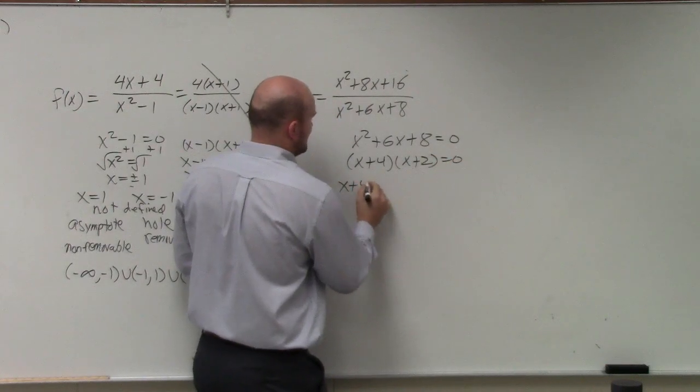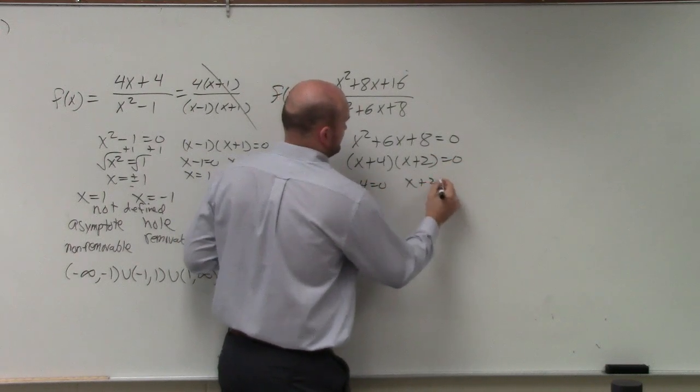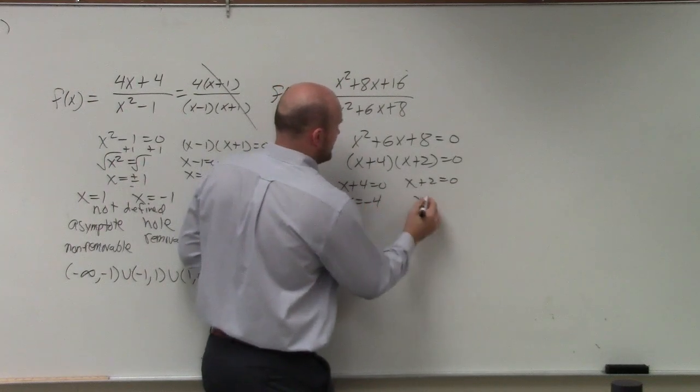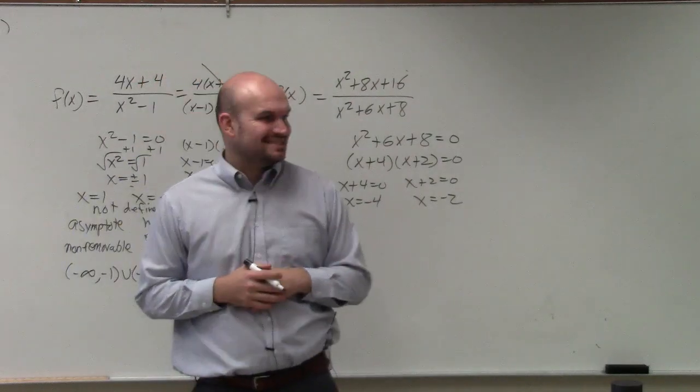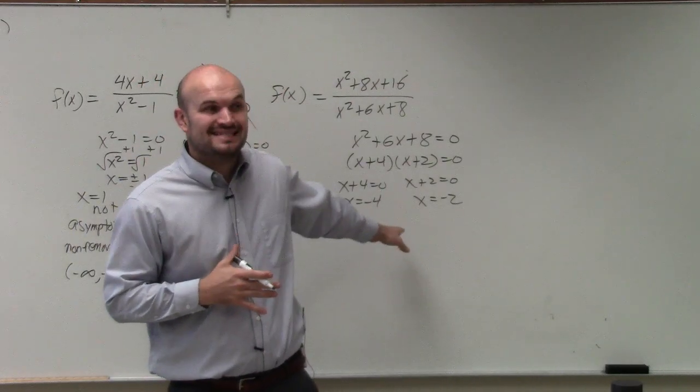So we set them both equal to 0. x equals negative 4, x equals negative 2. These are my two values where a function is not defined. These are my discontinuities.